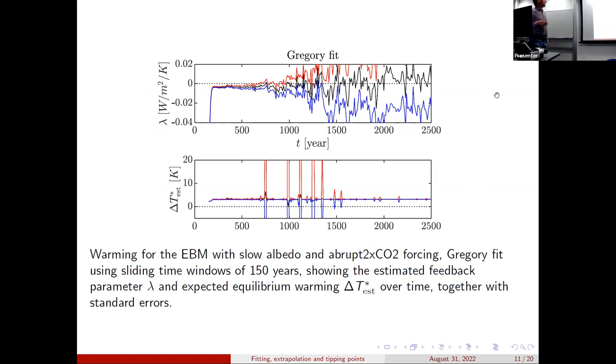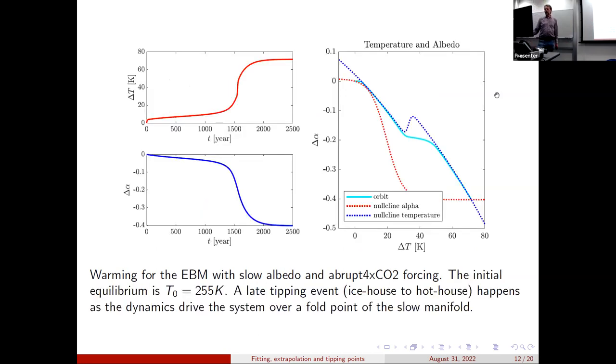If we now do Gregory type fits for this time series, and now we're doing actually a sliding time window of about 150 years. So we're trying to say if we look at different chunks of the time series, what would we estimate from that bit what the climate sensitivity is? Well, very quickly after the fast transient has gone away, you get a fairly constant estimation for the feedback parameter. But the nice thing is the standard errors from the fitting actually tell you that it's getting less and less firm as you go on, which is what you'd expect. You're losing more and more of the signal and you're just left with the variability. But still, the prediction for the estimated warming is pretty good most of the time.